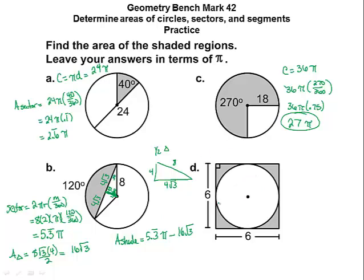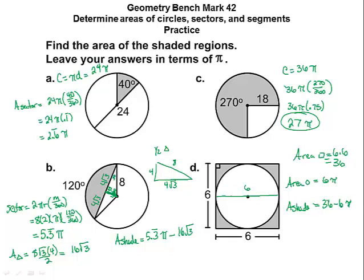For a circle inscribed in a square with side length 6: area of the square is 36. The circle has radius 3, so its area is 9π. The shaded area — the square minus the circle — is 36 minus 9π. Since the answer must be left in terms of pi, we can't combine those numbers.